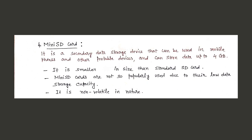A Mini SD card is a secondary data storage device that can be used in mobile phones and other portable devices and can store data up to 4 GB. It is smaller in size than the standard SD card. Mini SD cards are not very popular due to their low data storage capacity. It is also non-volatile in nature.